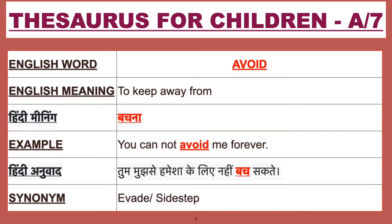Our next word is Avoid. English meaning of Avoid is to keep away from. Avoid ka Hindi meaning hai Bacchanah. For example, you cannot avoid me forever. Isay Hindi mein bolenge, Tum mujhse hamisha ke liye nahi bach sakte. Synonym of Avoid are Evade, Side step.